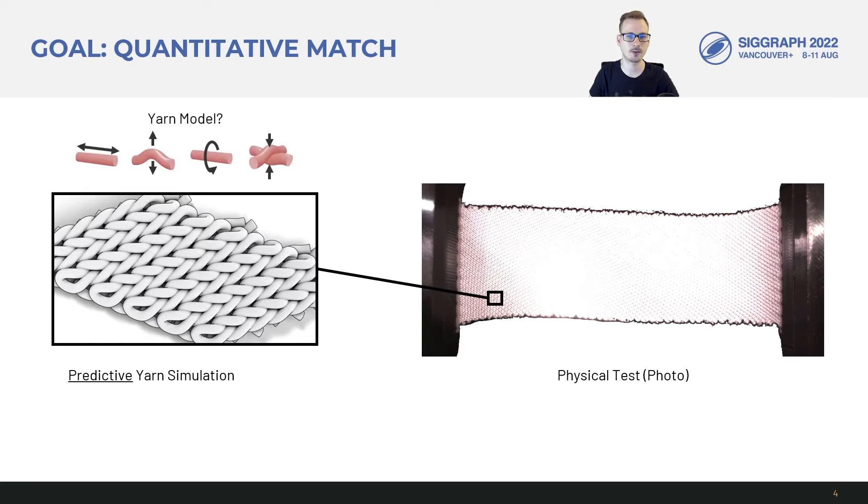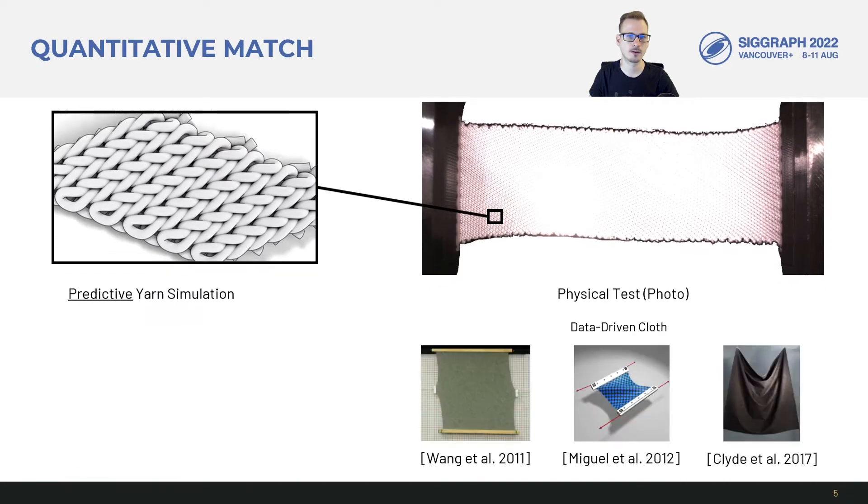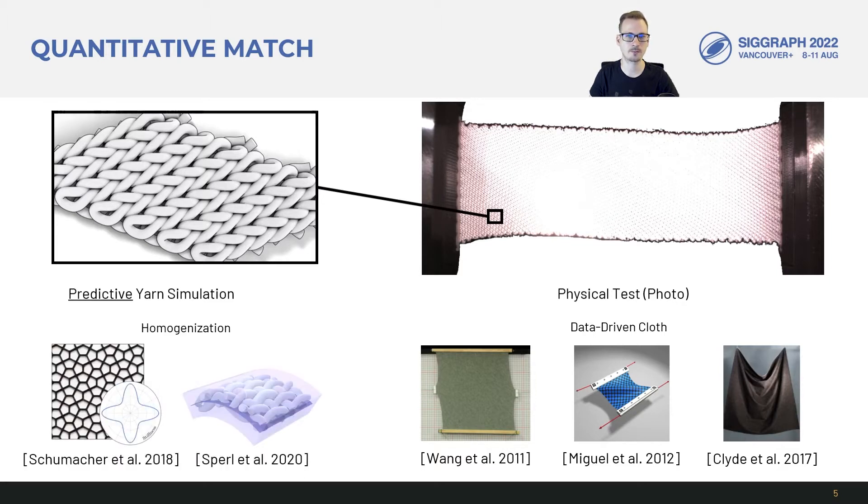A priori, it's also not clear if the rod models mentioned previously are descriptive enough to reproduce the complexities of real data. While there is work on fitting thin shell cloth models from physical tests, we're interested in fitting the underlying yarn model. Similarly, there is previous work that estimates the forward transition from small rod or yarn structures to a large mechanical response while we want to do the inverse going from large-scale mechanics to small-scale parameters.